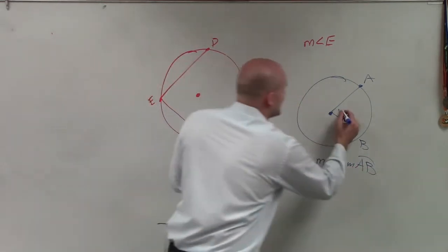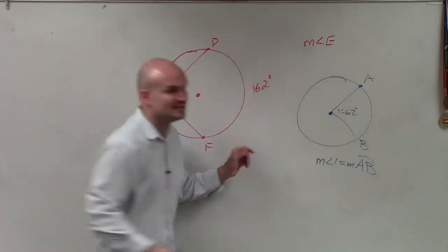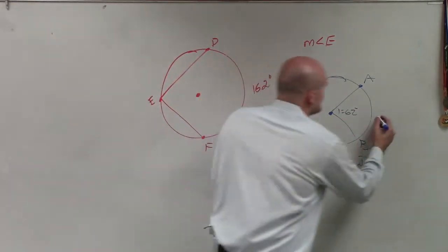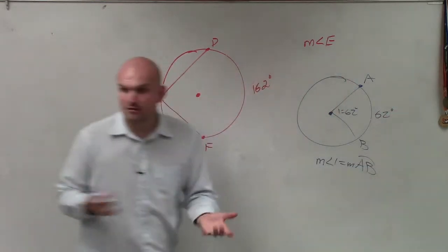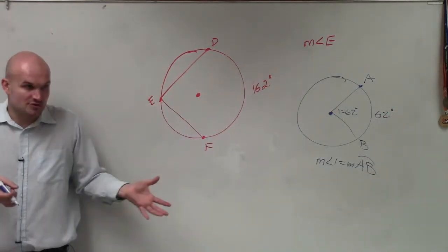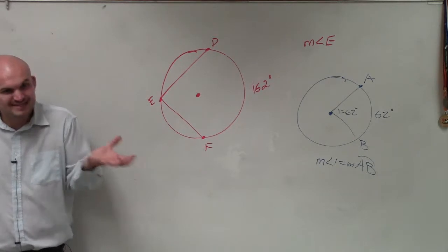So therefore, if I say that's 62 degrees, the arc measurement is also 62 degrees. That's what we're talking about. Our central angle and the arc measure have the same measurements.